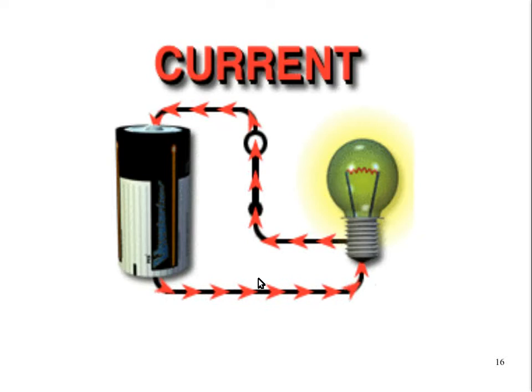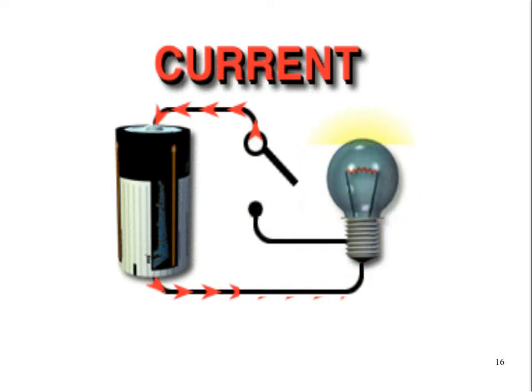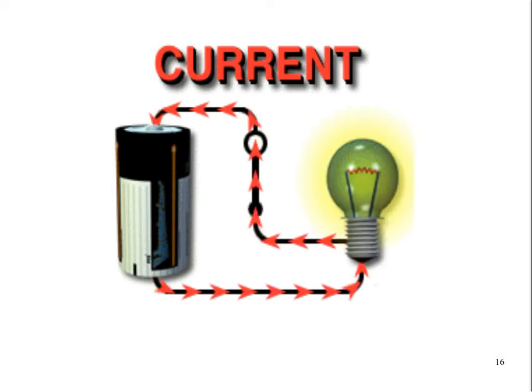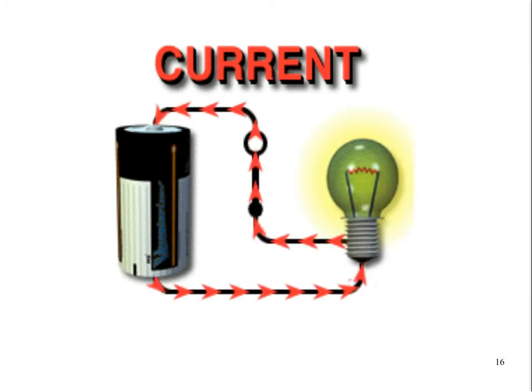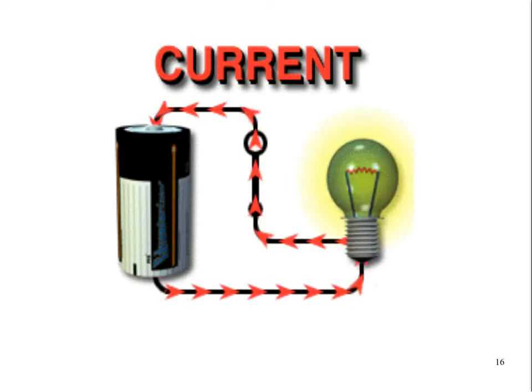It's certainly possible to have charge move from one location to another through a single path. If we don't have a return, the charge would build up to such a degree that it would stop flowing. So that's why we need to have a complete circuit for electricity to flow continuously, not just like a spark or lightning.